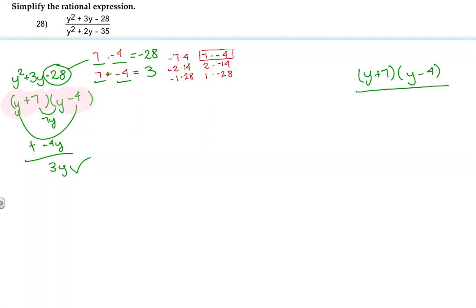So for the denominator, I'm going to write it down over here. y squared plus 2y minus 35. Once again, if I have a trinomial and it's factorable, it will always factor into two binomials.